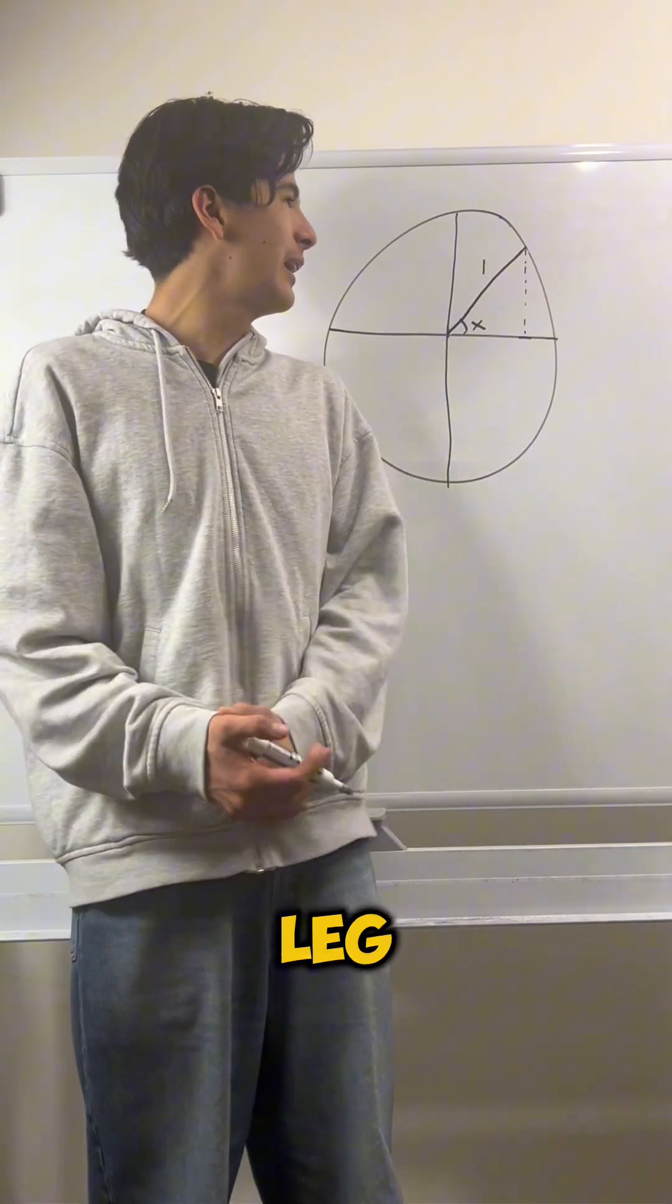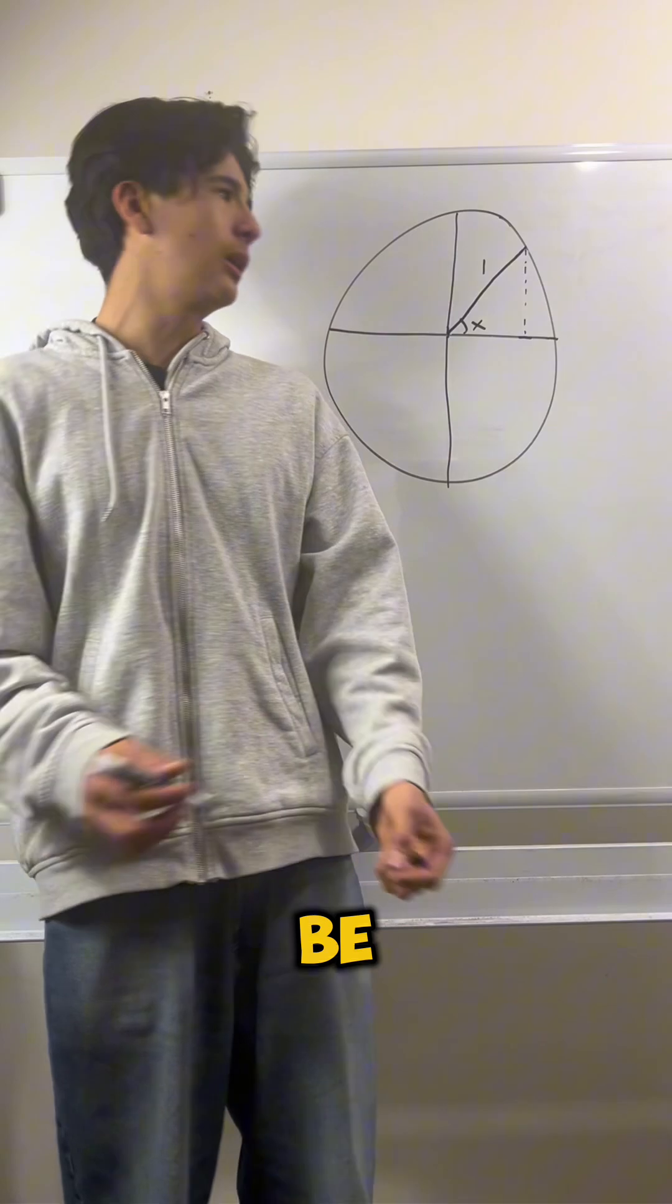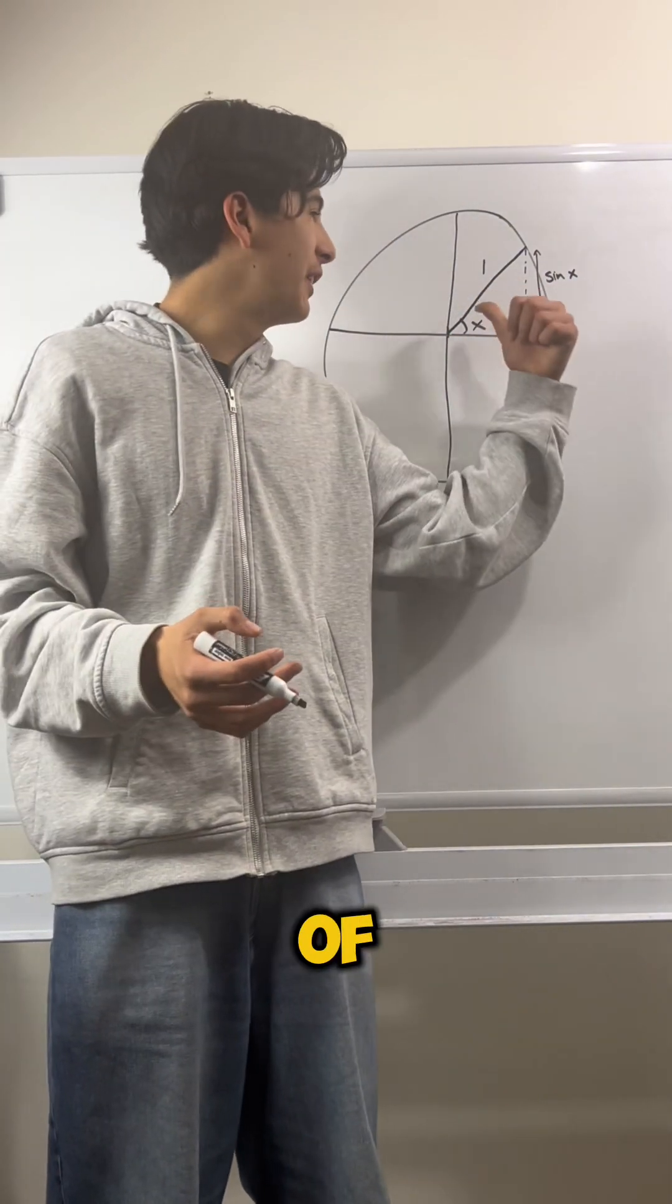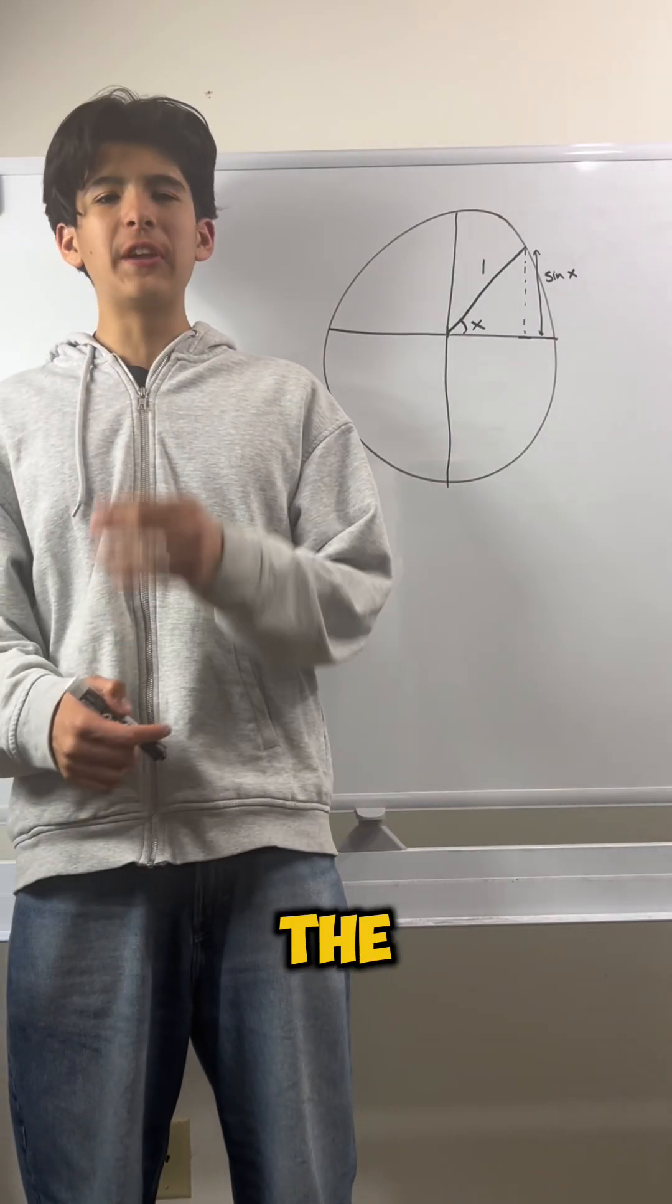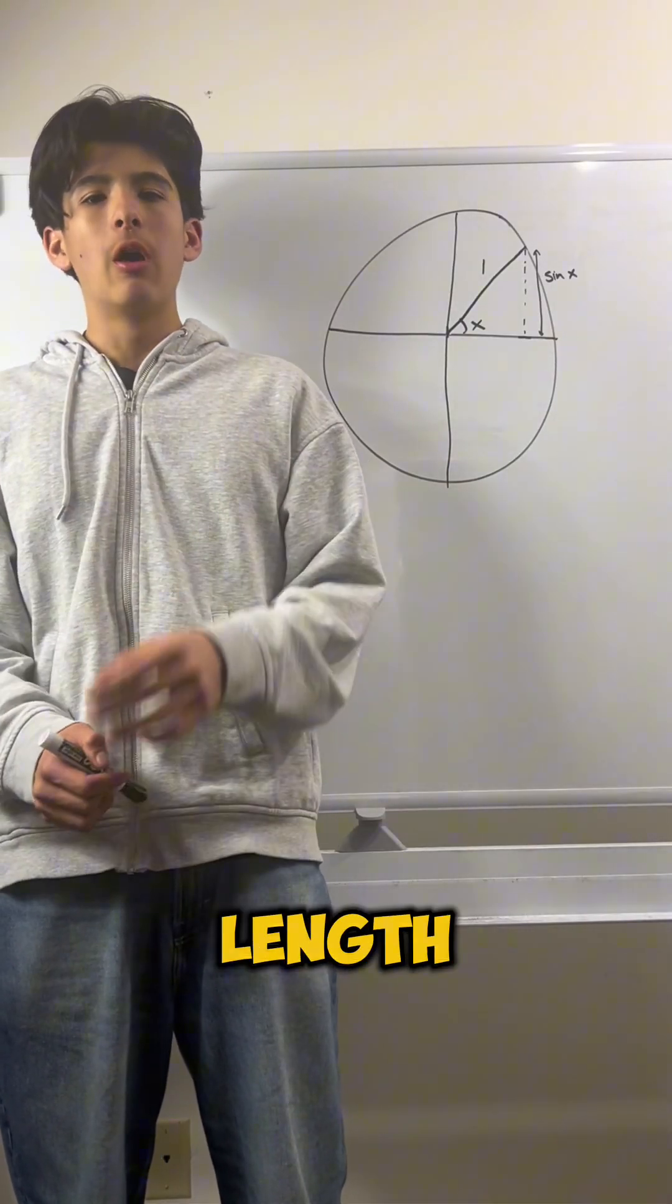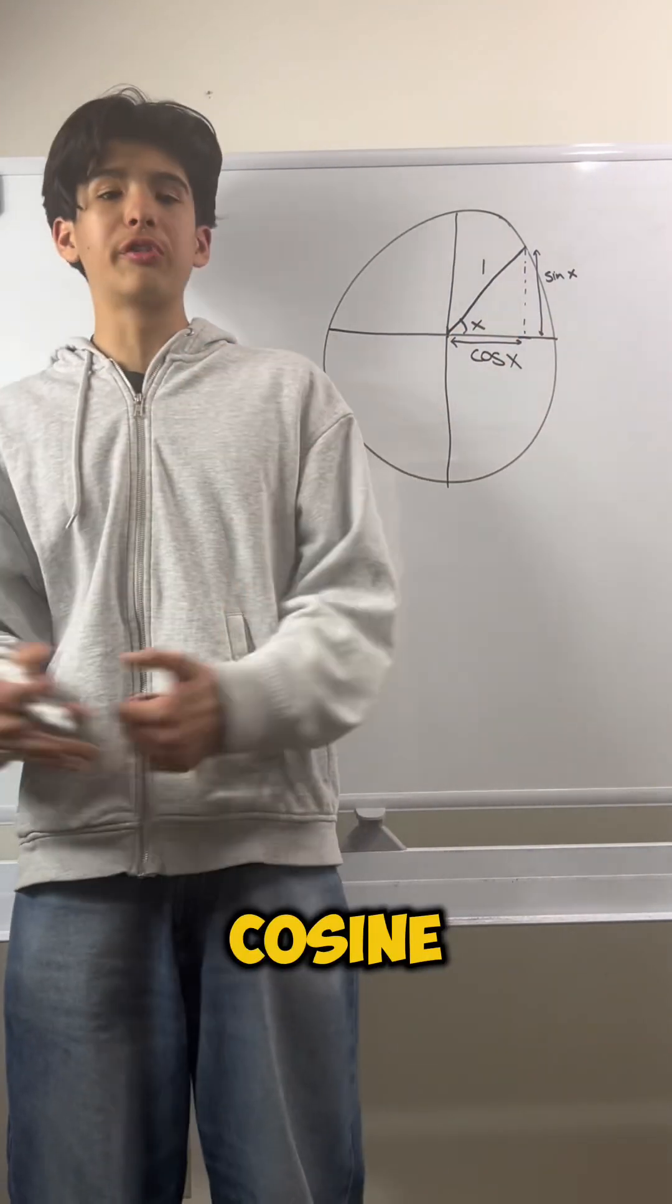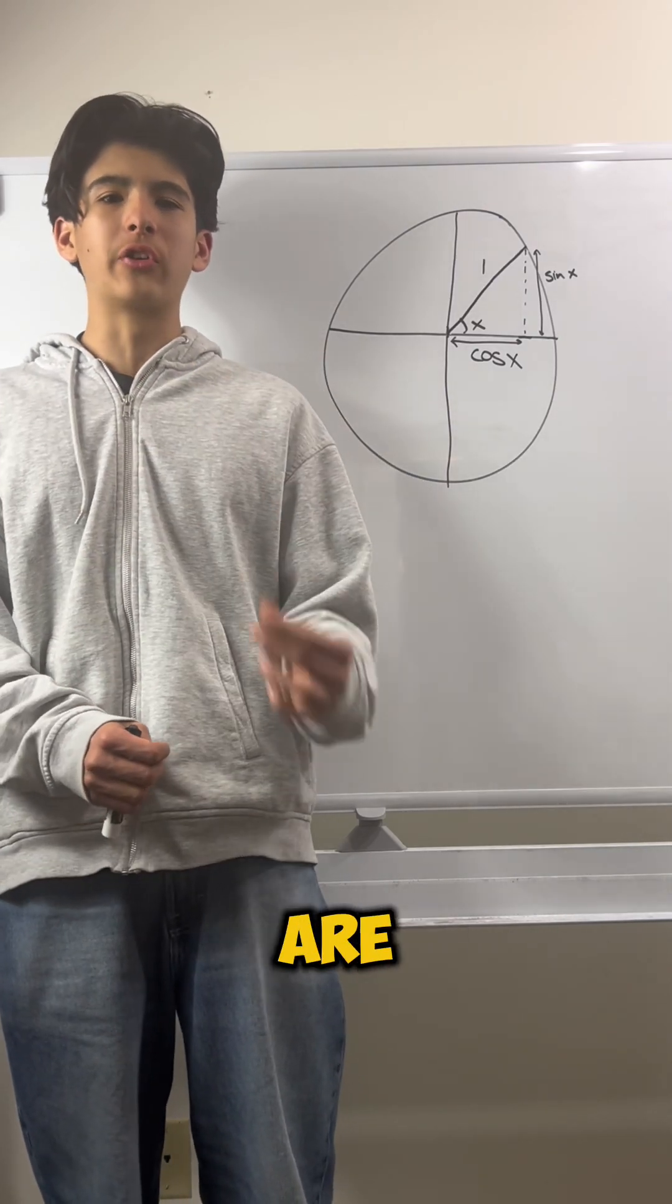Now, imagine we took this leg and we gave it a length. Well, that length is defined to be the sine of x. The sine of this angle right here is this length right here. Now, imagine we took the other leg and we gave it a length. Well, the length of that line would be the cosine of x. Great. So, now we know what sine and cosine are defined as.